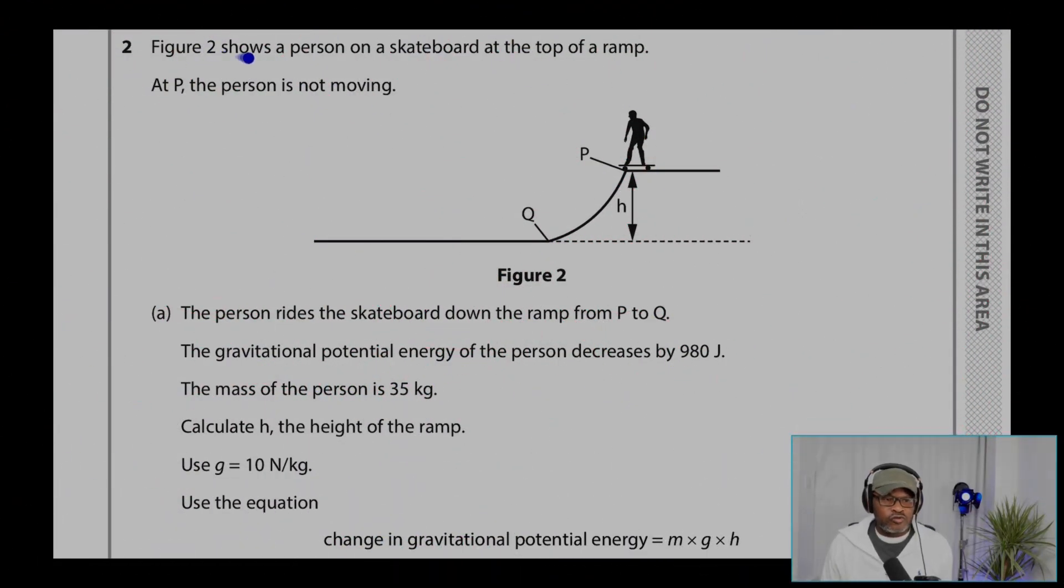Question 2. Figure 2 shows a person on a skateboard at the top of a ramp. At P, the person is not moving. As figure 2, that's 2A, the person rides the skateboard down the ramp from P to Q.